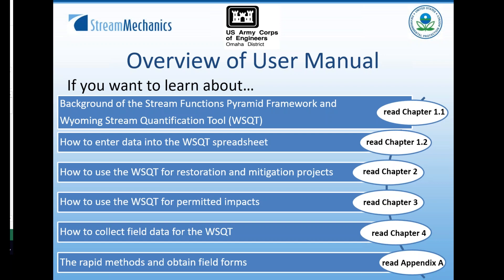We've taken all the rapid methods from chapter four and consolidated them into Appendix A to make field data collection simpler for those going out to do a rapid assessment. Appendix A includes a description of the rapid methods and field forms you could use to fill out for the tool. The user manual is about a hundred pages, but use this diagram as your guide — you don't necessarily have to sit down and read it from cover to cover. There is also a frequently asked questions document in Appendix B, and I strongly recommend you read that first because some of your questions may already be answered.